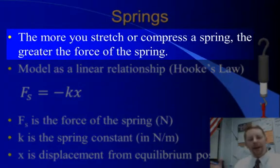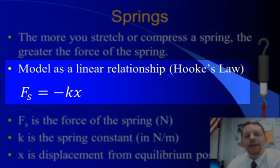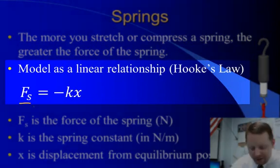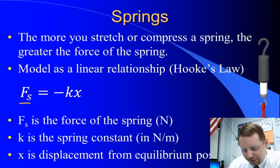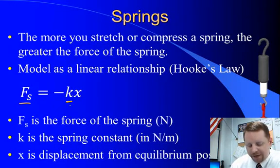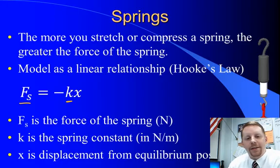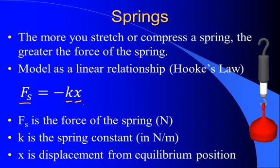The more you stretch or compress a spring, the greater the force of the spring. This is typically modeled as a linear relationship known as Hooke's Law, which says that the force on the spring Fs, measured in newtons, is equal to some constant k — which describes the spring in newtons per meter. The larger the spring constant k, the stiffer the spring. This is multiplied by the displacement x from the equilibrium position — that's not the total length of the spring, but how far you stretch or compress it from its rest or equilibrium position.